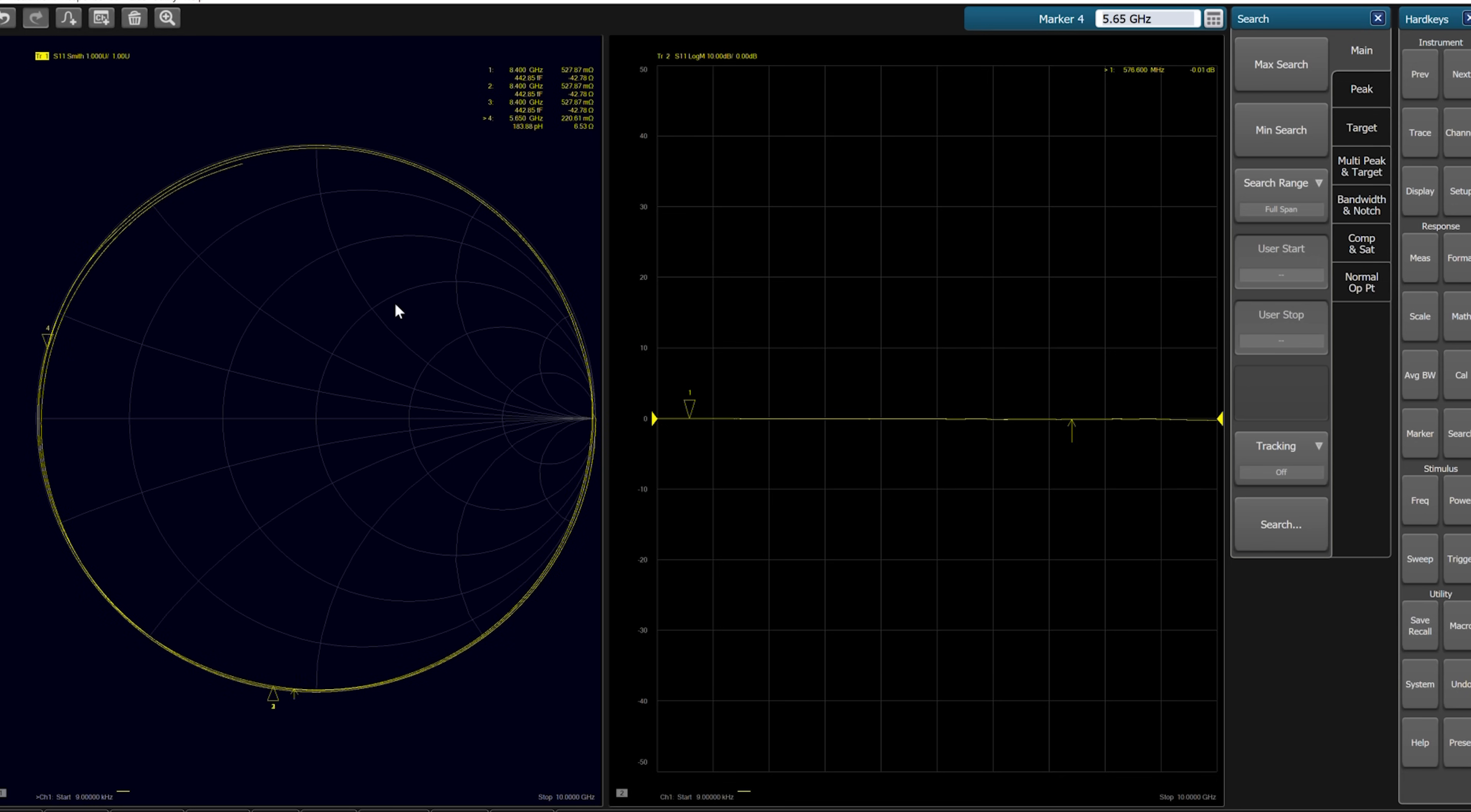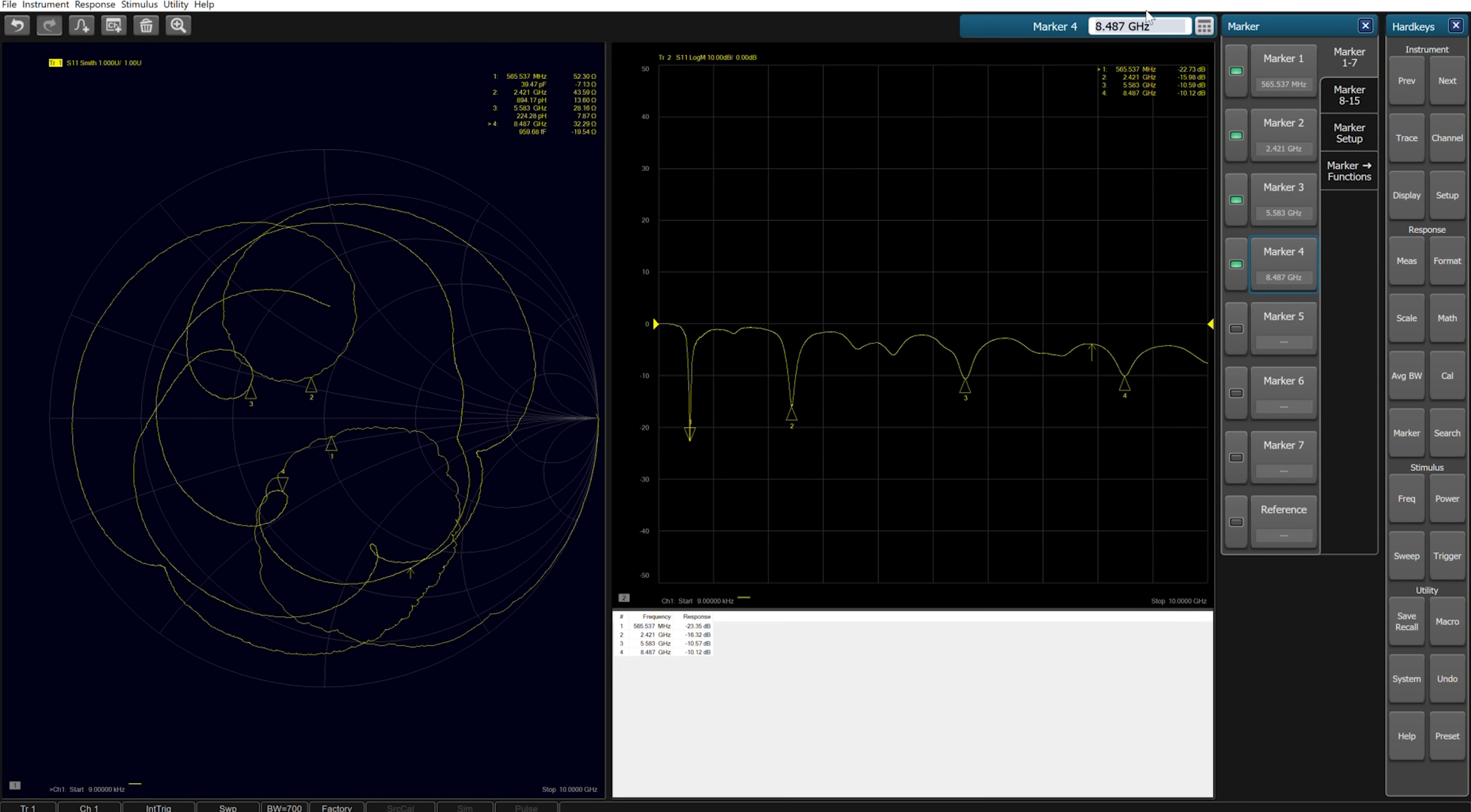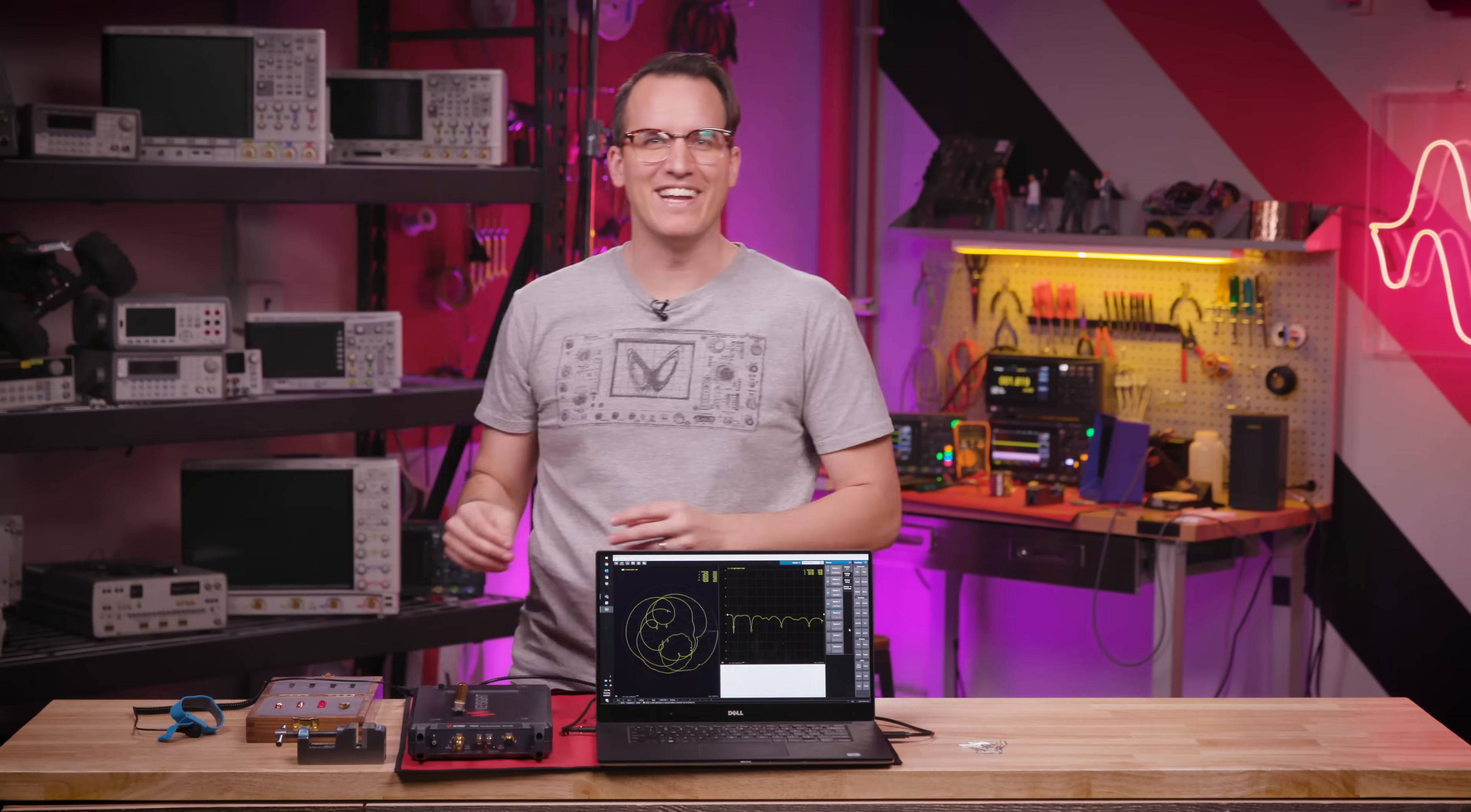Our Smith chart shows that we're basically going between open and short circuits, and we have pretty much no loss on our log mag chart, or our logarithmic magnitude chart. Now we're going to swap in our paper clip antenna. You can see as the frequency sweeps from 0 to 10 gigahertz, our impedance changes. There are a couple interesting points that stand out here on our S11 log mag plot. This is frequency versus power. These dips show us that the paper clip is either transmitting power at those frequencies, or it's dissipating power as heat. Doesn't feel like heat.